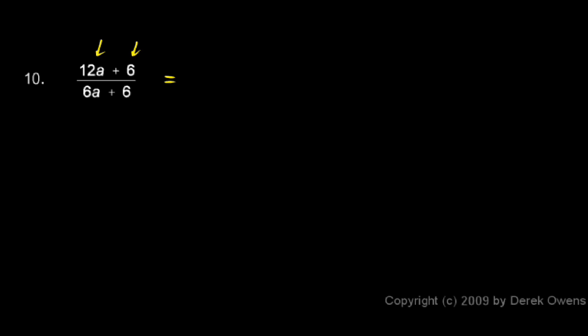The 12a and the 6 each have a factor of 6 that can be pulled out. So when I take a 6 out of the 12a, I think 12a divided by 6, that leaves me with 2a, and then just plus 1. And you can see if you redistribute, 6 times 2a gives you 12a, and 6 multiplied by the 1 gives you the 6.